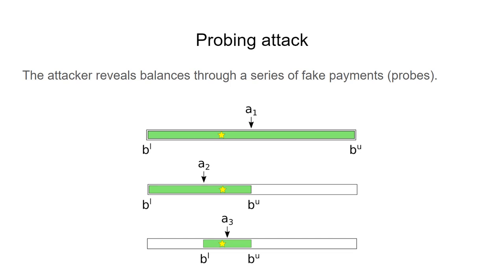This is the essence of the probing attack, and we can visualize it as follows. So we have the white interval that depicts all the positions of possible balance in the channel, and the green interval depicts all the positions of the balance according to the attacker's current knowledge.